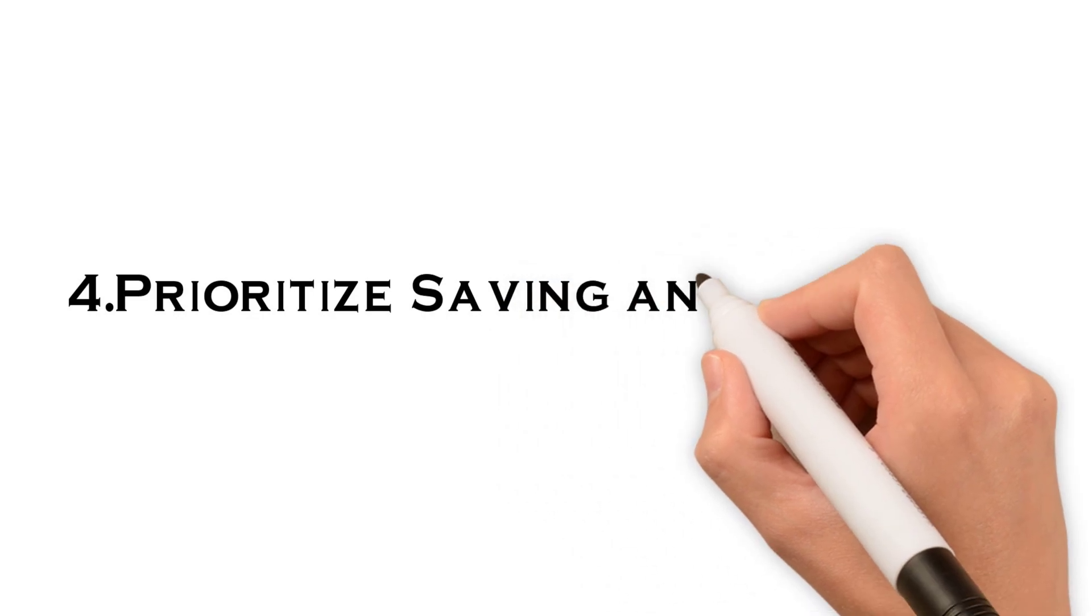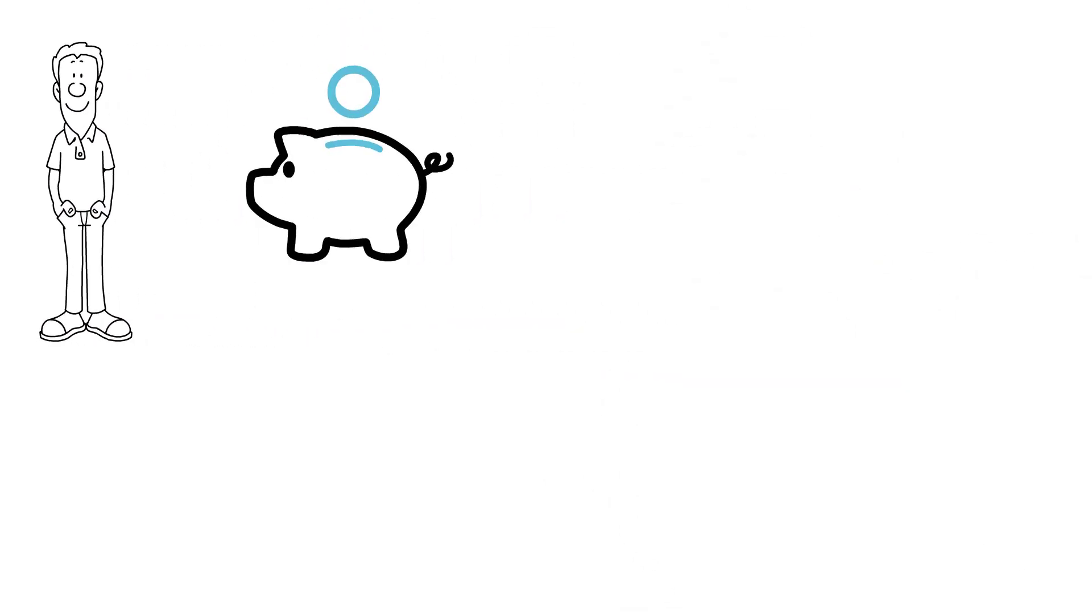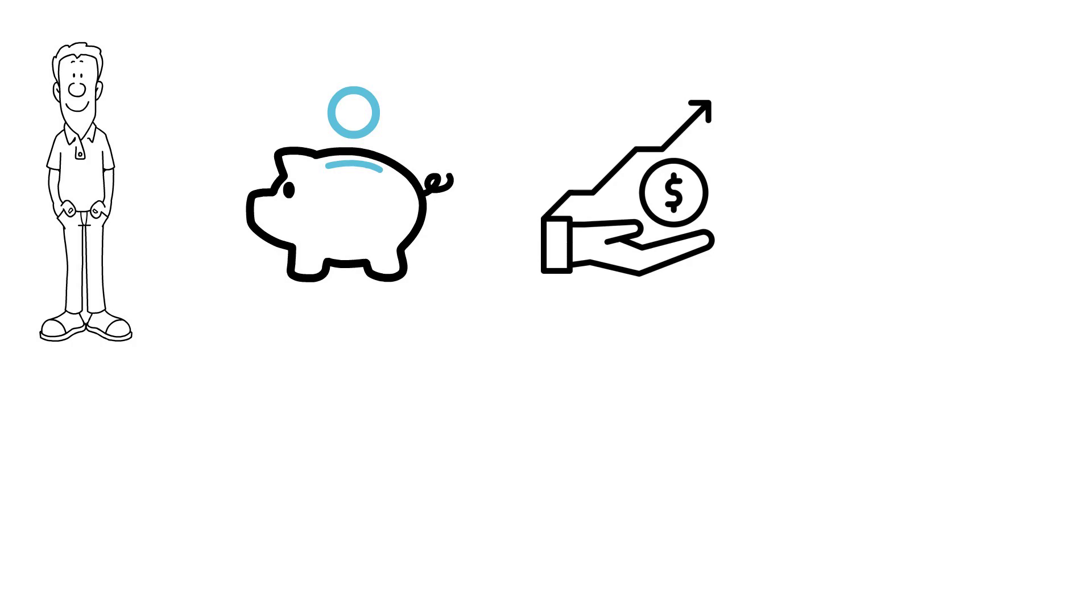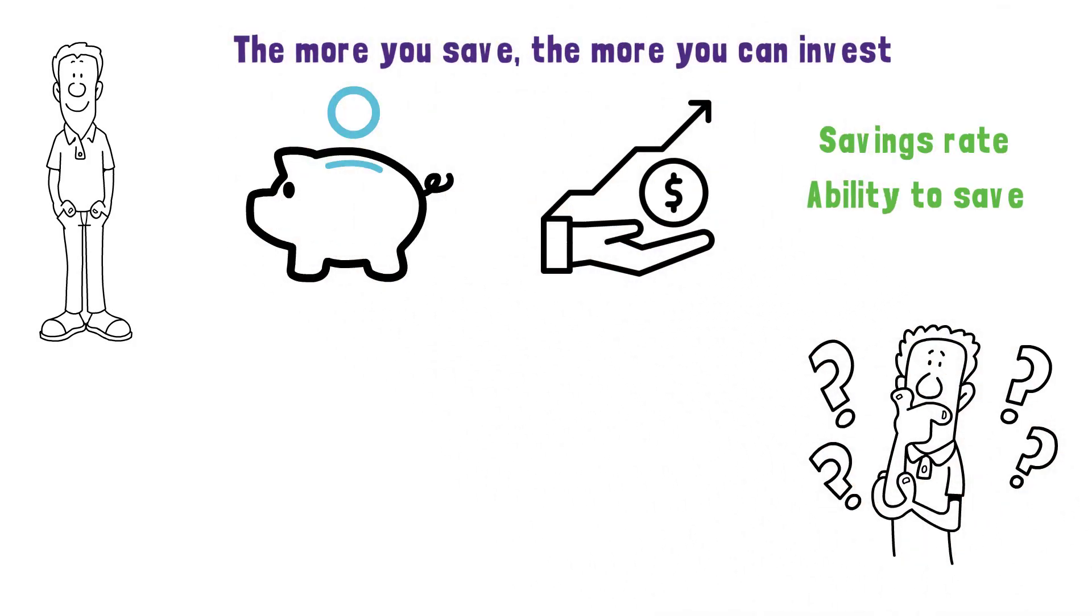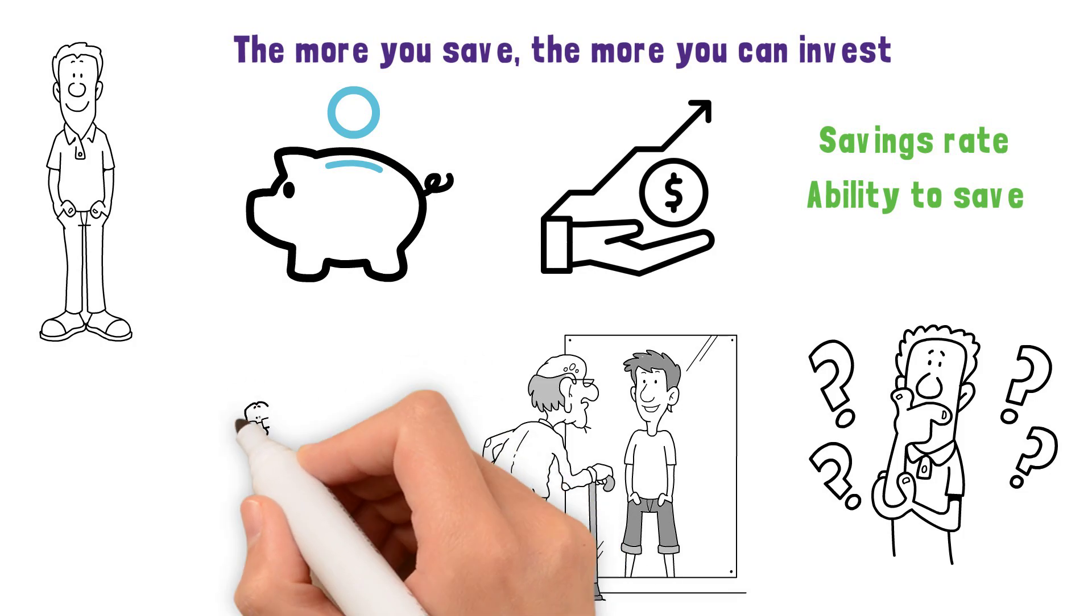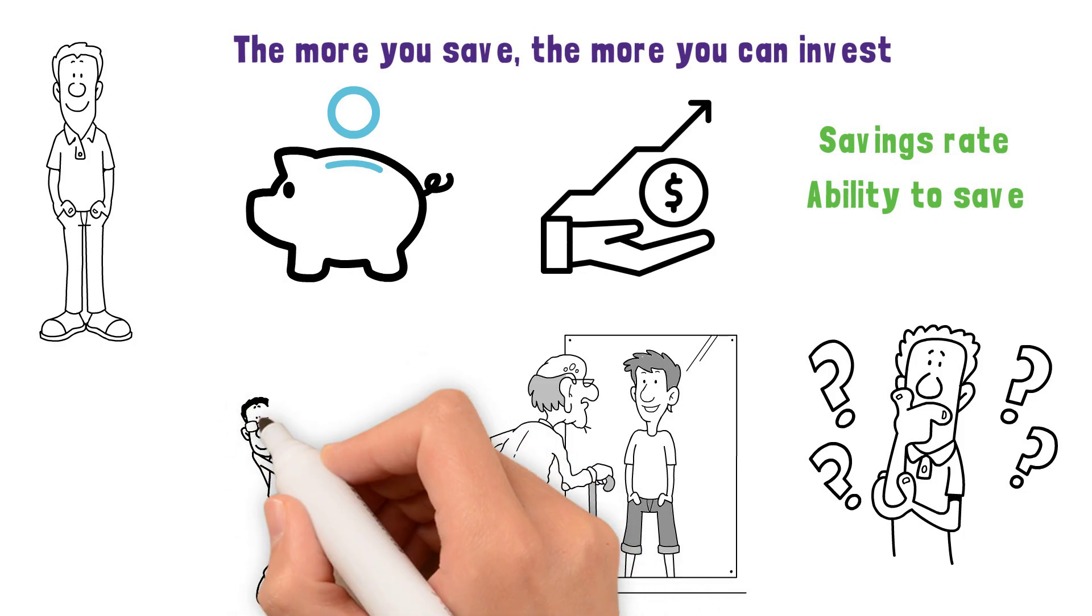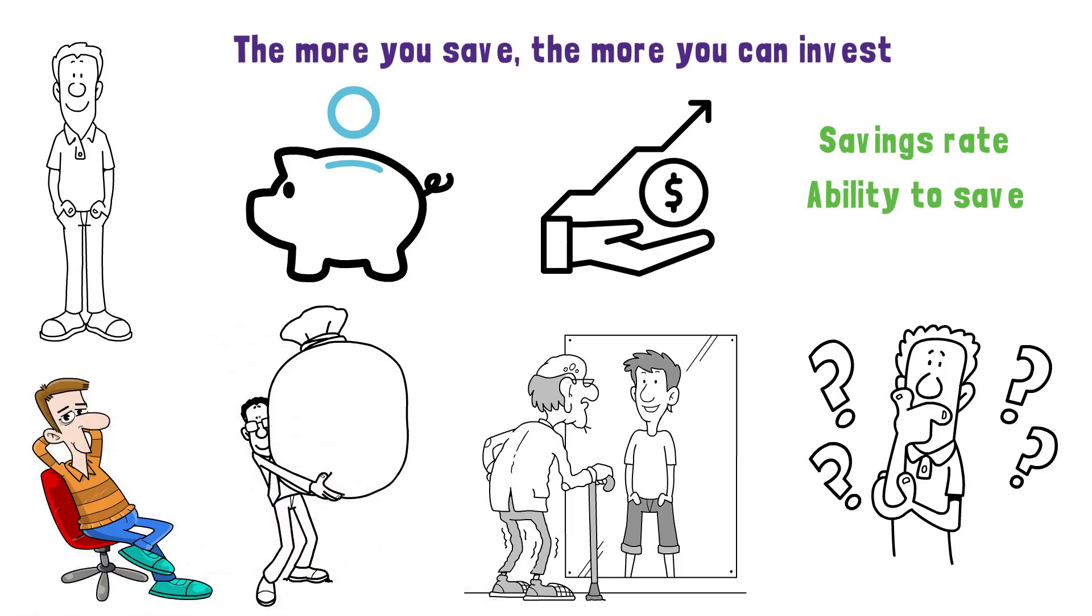Four, prioritize saving and investing. If you want to retire early, you have to make saving and investing your utmost priority. There's no way around it. In fact, your ability to save, your savings rate, is one of the biggest determining factors on if you'll be successful in your pursuit of FIRE. The more you save, the more you can invest. And this goes for both retirement and non-retirement accounts. This is why the FIRE strategy radically encourages you to throw large sums of money into savings and investments to help you retire early.